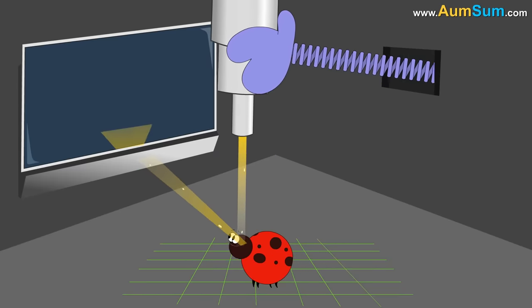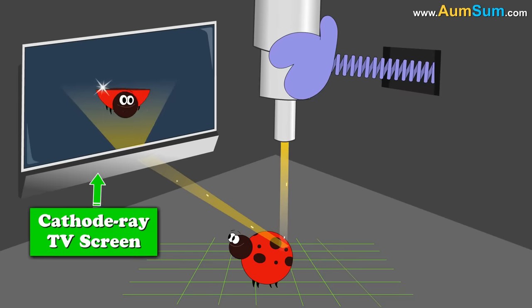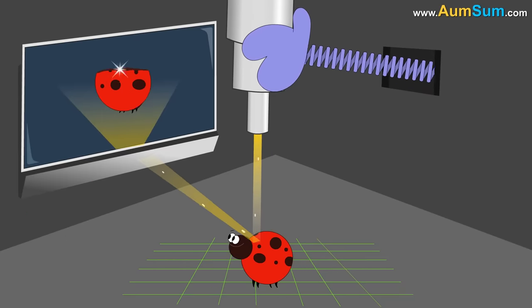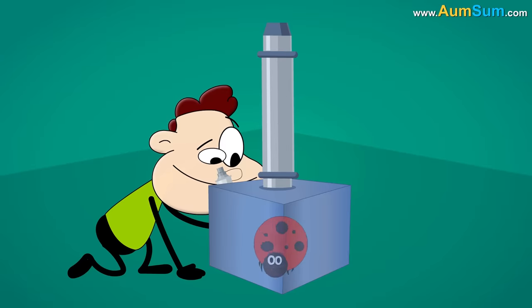These reflected electrons or secondary electrons are directed at a cathode ray TV screen. The image of the scanned object is formed on this screen. This is how a scanning electron microscope works.